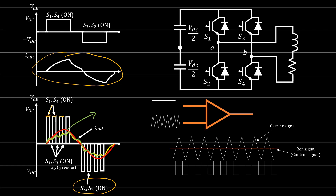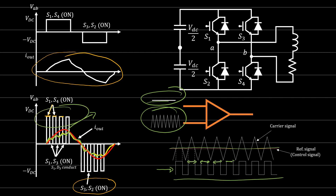We need a modulation technique — not just simple on/off switching. The general approach to generating a pulse-width modulated signal for the switches is to compare a triangular carrier wave with a reference wave. For DC-DC converters we compared with a straight DC reference, but now the reference signal is a sine wave. We compare the triangular wave with a sine wave to control the width of the PWM pulses.